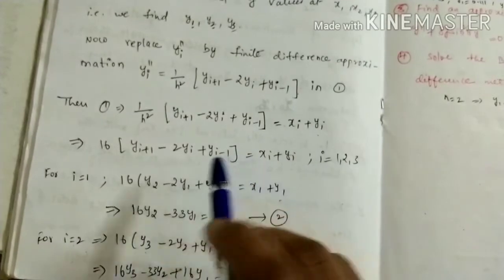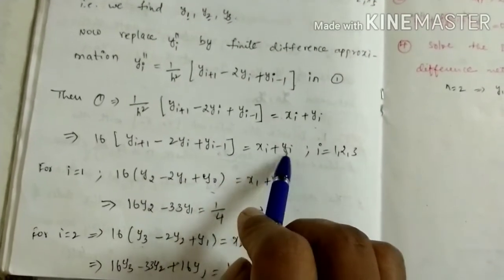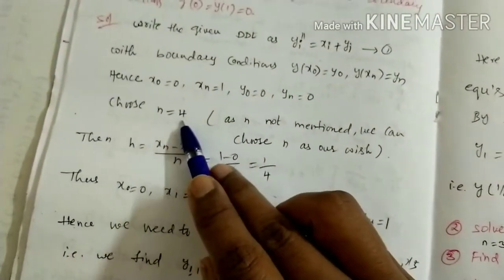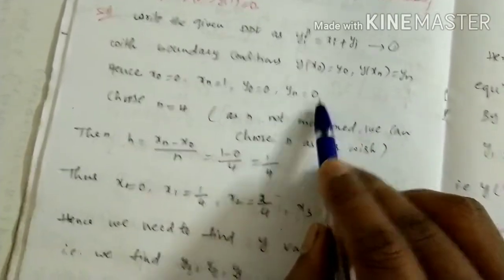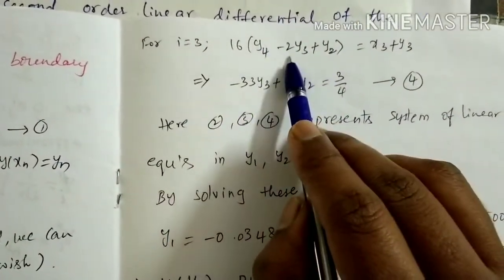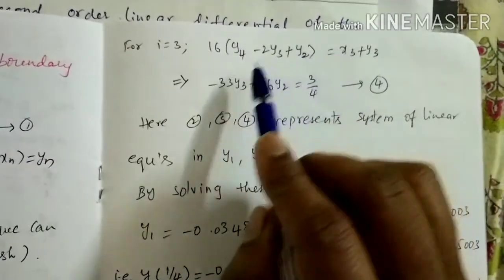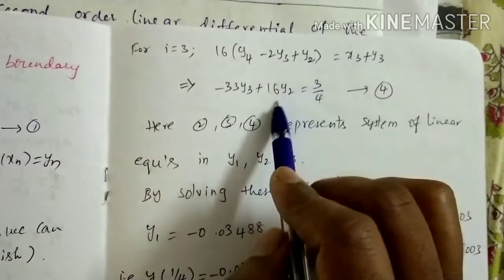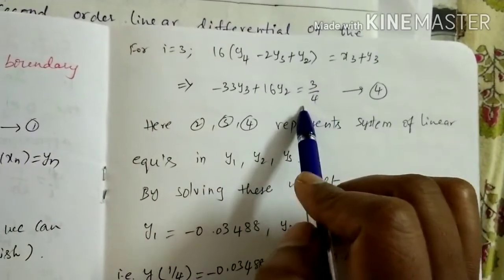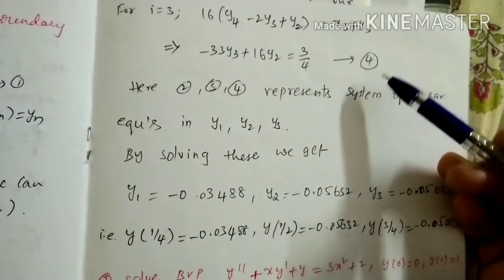For i = 3: 16(y₄ − 2y₃ + y₂) = x₃ + y₃. We have y₄ = 0 since n = 4 and yₙ = 0, so that term vanishes. Moving y₃ to the left side gives −32y₃ − y₃ + 16y₂ = 3/4, i.e., −33y₃ + 16y₂ = 3/4. This is equation 4. We can observe that equations 2, 3, and 4 form a system of three linear equations in three unknowns y₁, y₂, y₃.